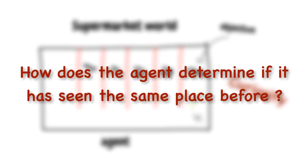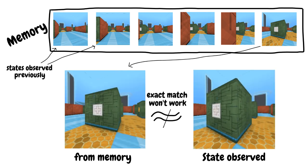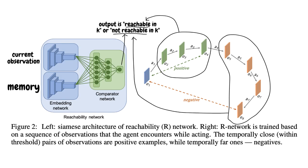How does the agent determine whether it has seen the same place before? The agent keeps in its memory snapshots of the states that it has seen. However, comparing the memory directly to the observations doesn't help much — you may be looking at the same room from different angles. Instead, we can train a neural network that takes as input the current observation and the previous states in the agent's memory, and the model can then estimate the number of steps it needs to observe the same state again.